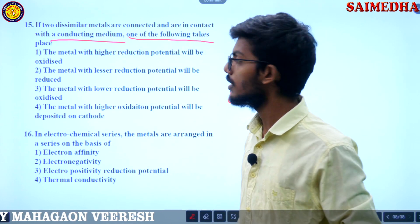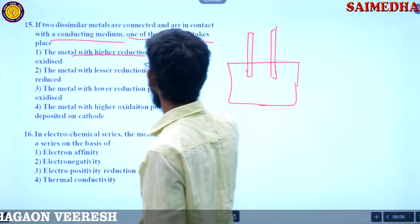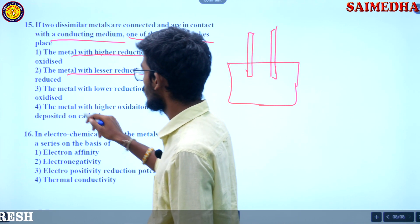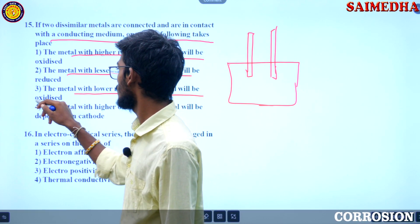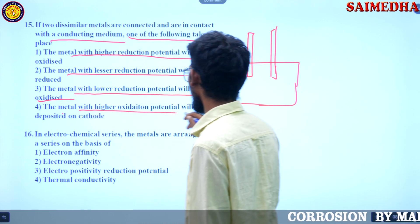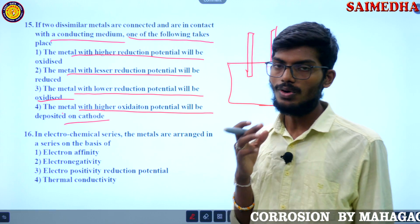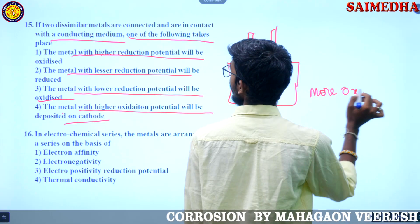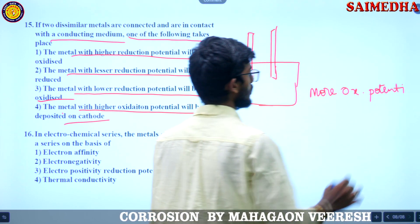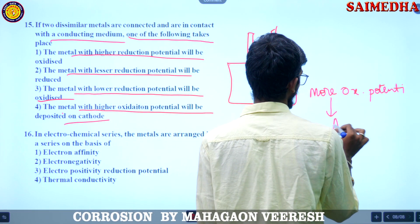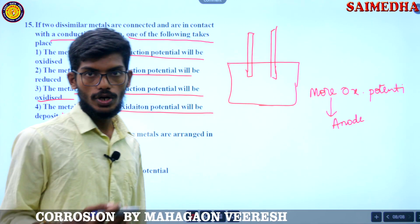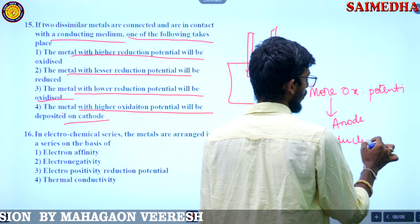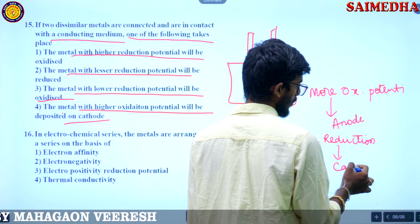The metal with lesser reduction potential will be oxidized, and the metal with higher oxidation potential will be deposited at the cathode. More oxidation potential means the metal acts as the anode, and more reduction potential means it acts as the cathode.